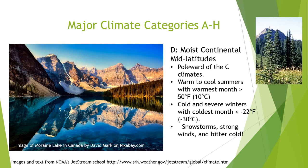Moving slightly further north or south leads us to the moist continental mid-latitudes. These areas are not as warm in the summer and don't have as many convective storms. They have warm or cool summers where the warmest month reaches more than 50 degrees Fahrenheit or 10 degrees Celsius, but cold and severe winters that can drop below minus 22 degrees Fahrenheit or minus 30 degrees Celsius. They're still moist with lots of precipitation and vegetation, and include places like Canada, Eastern Europe, Russia, and China.